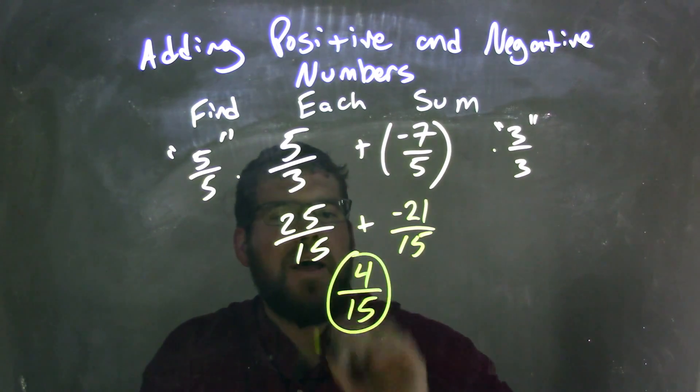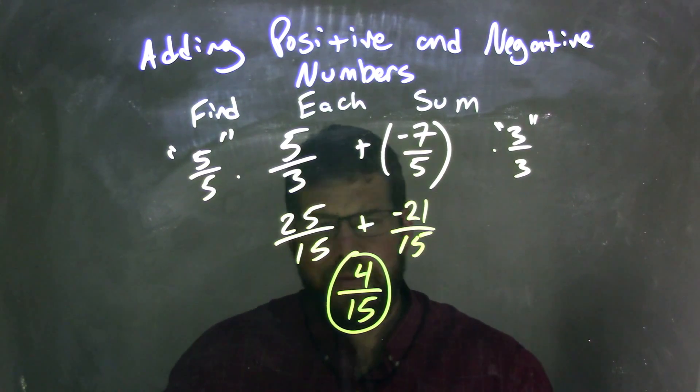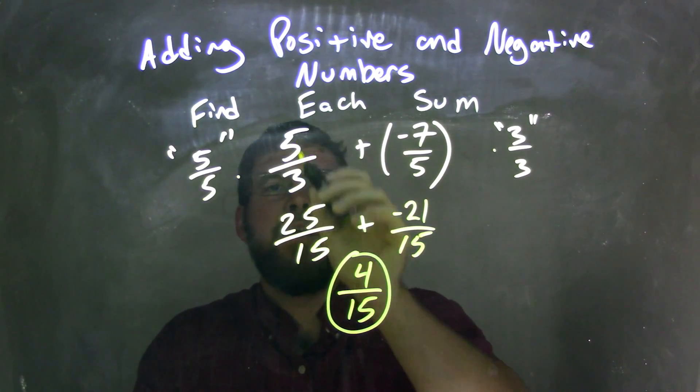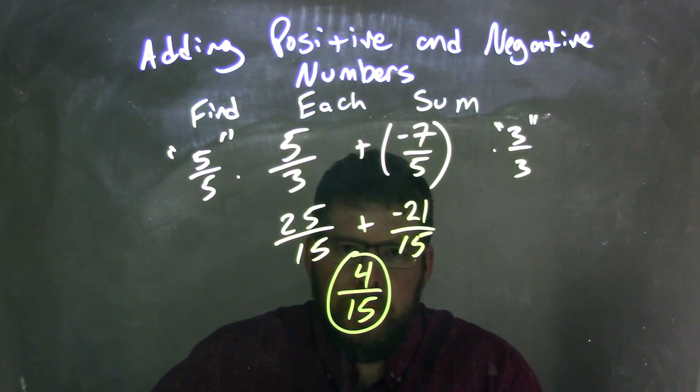So 4 fifteenths would be my final answer. I can't simplify anymore. Again, let's start from the beginning. We have 5 thirds and negative 7 fifths. We needed to find a common denominator.